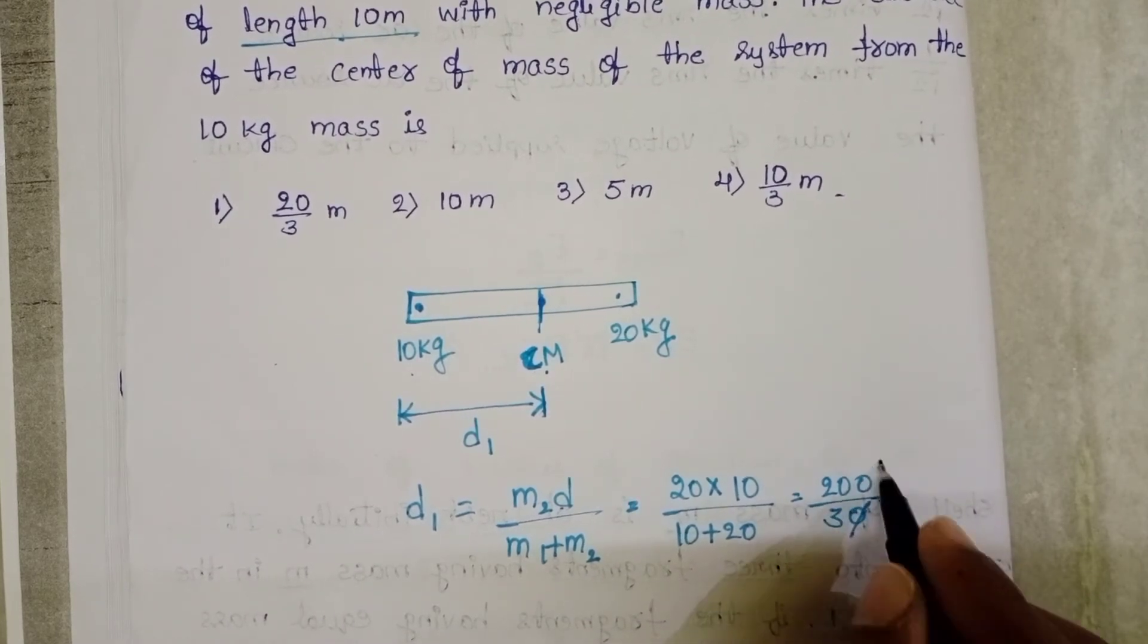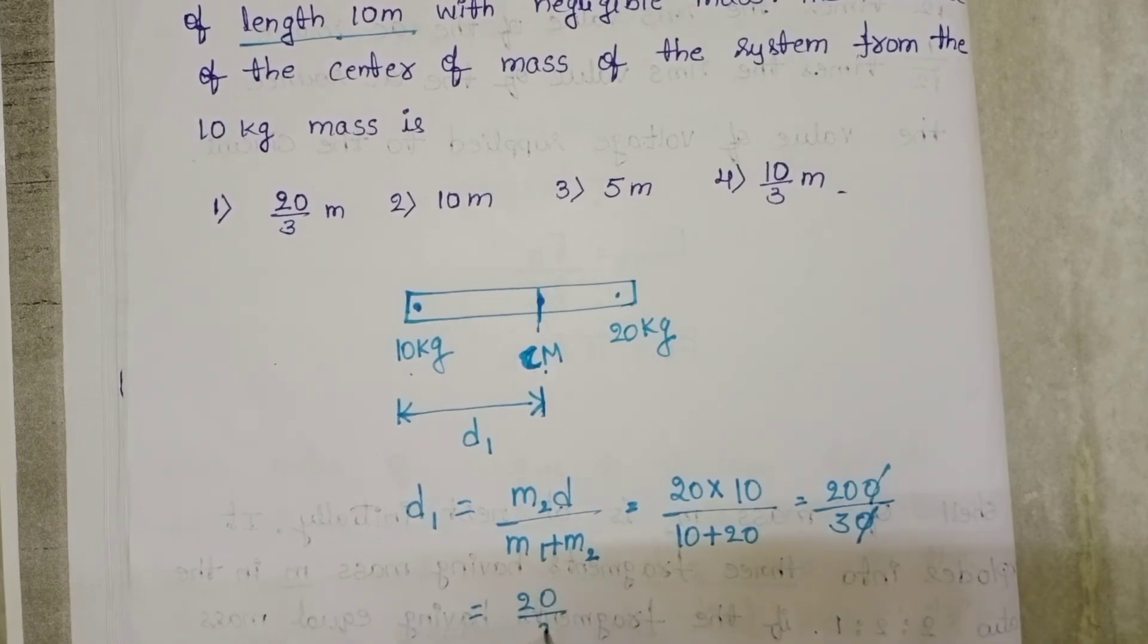This gives 200 divided by 30. The answer is 20 by 3 meters.